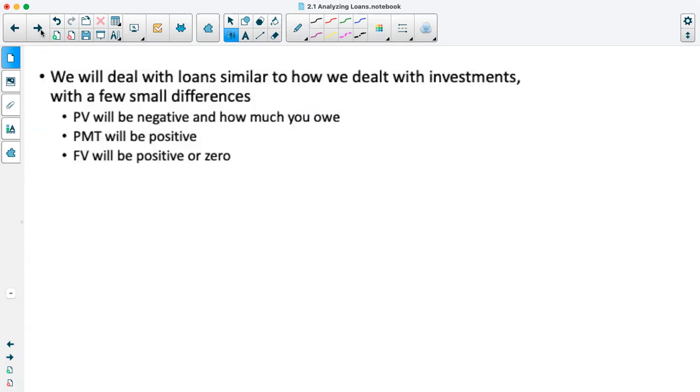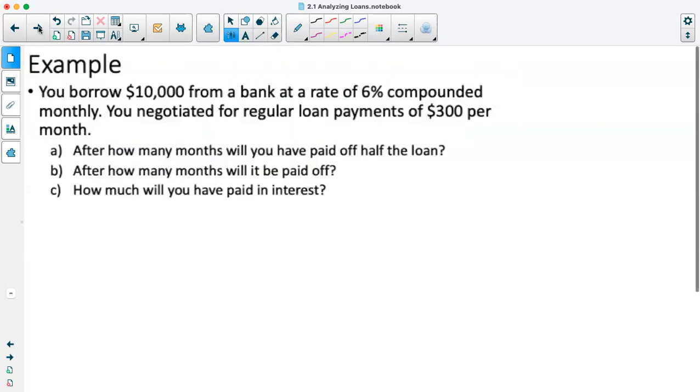We'll deal with loans similar to how we dealt with investments, with a few small differences with how we enter into our TVM solver. First, our present value will be negative and will be how much we owe. Our payments will be positive and our future value will be positive or zero. If we're paying off a loan entirely, it's going to be zero. If we have a question that asks until we owe a specific amount, then we'll have a positive future value.